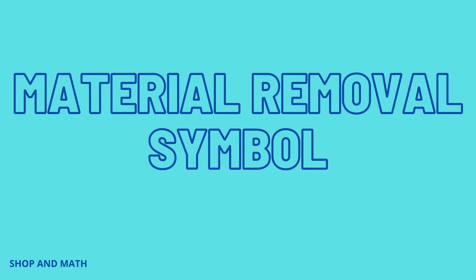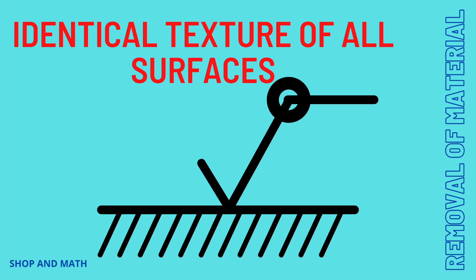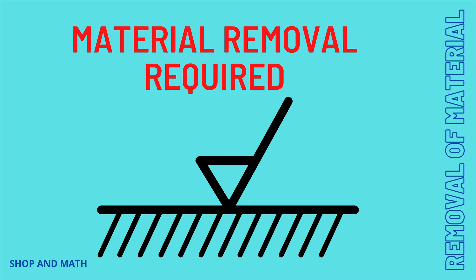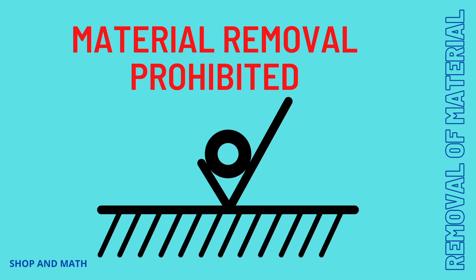Material removal symbols. The circle around the bent elbow means identical surface texture all over — this is one of the newest surface texture symbols and you may not have it in your textbook. When the symbol is by itself without any accompanying symbol like a lay symbol, it can be produced by any method of machining. The material removal required symbol is usually accompanied by other symbols such as lay. Material removal prohibited is used when, for example, a surface is a datum for an internal reference dimension.